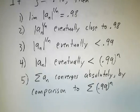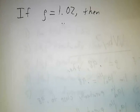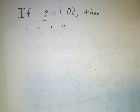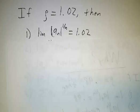On the flip side, if the limit of the roots was bigger than 1, then we use the same sort of argument. The limit of the roots is some number bigger than 1, like 1.02.